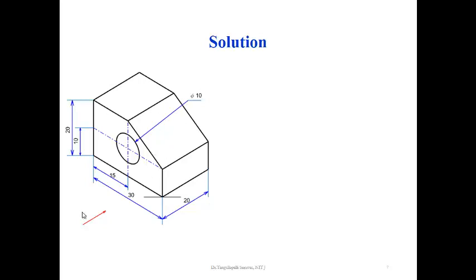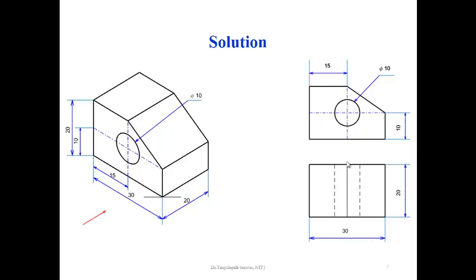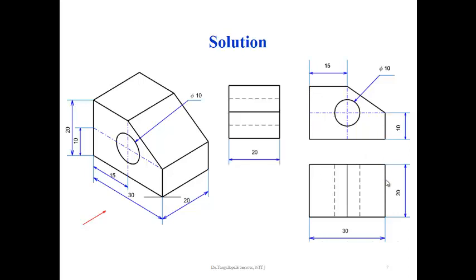To start the orthographic views, first we have to draw the front view. After the front view, either the side view or top view can be drawn — there is no strict rule to follow. The top view is to be drawn exactly below the front view, and the right hand side view is drawn aligned to the front view.